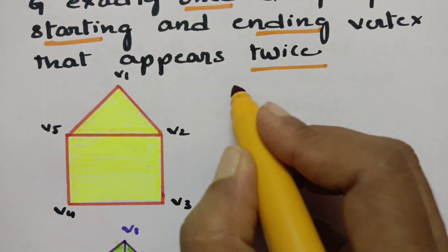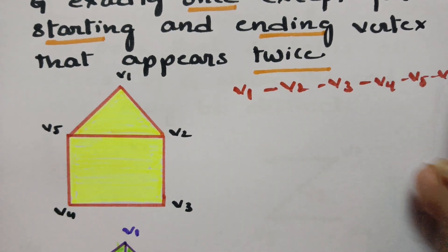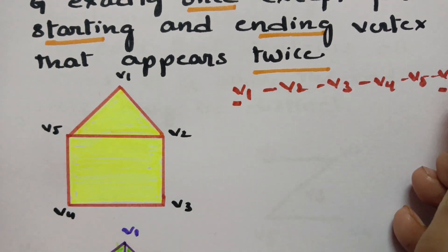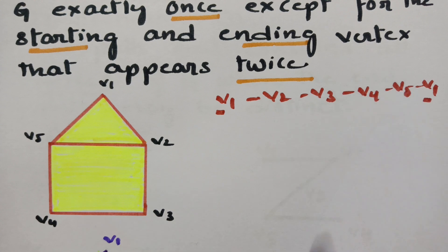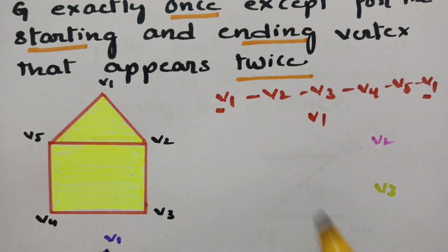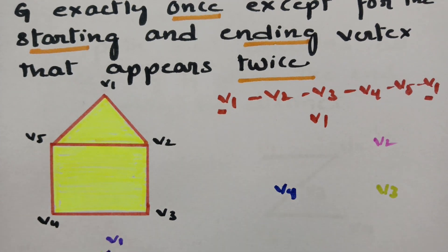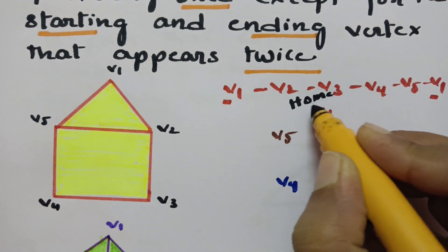Let me show you the walk sequence. The path is v1 to v2, then v3, then v4, then v5, and again back to v1. So the starting and ending vertex v1 appears twice, whereas the remaining vertices should have no repetition — only crossed once.